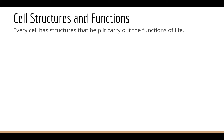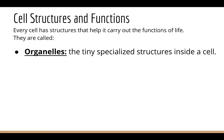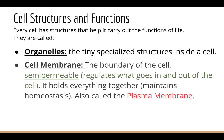Now, cell structures and functions. Every cell has structures that help them carry out the functions of life — they're called organelles, and they're tiny specialized structures inside of a cell. Cells also have cell membranes. Both prokaryotes and eukaryotes have these membranes — they're the boundary of the cell. They're what we call semi-permeable. Semi means partway, and permeable means something is able to get through or permeate through the membrane. So the semi-permeable membrane regulates what goes in and out of a cell — it allows certain things like gases such as oxygen or carbon dioxide to go through, but it protects the cell from viruses or other things that might try to get in.